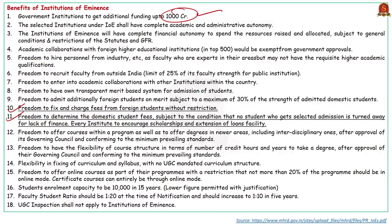The institutions selected from the private sector will have autonomy to promote innovation and creativity. The University Grants Commission has notified regulations for private institutions and guidelines for public institutions in 2017 to provide a regulatory structure for enabling these institutions to become world-class teaching and research institutions.